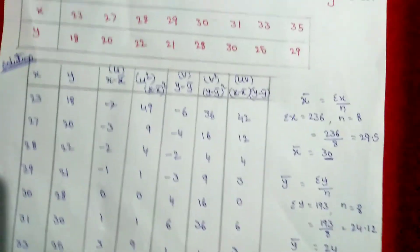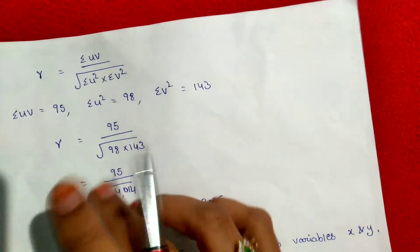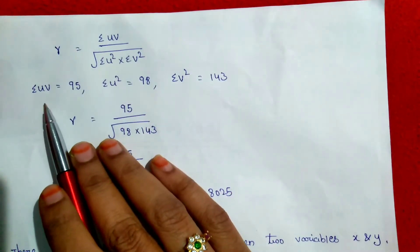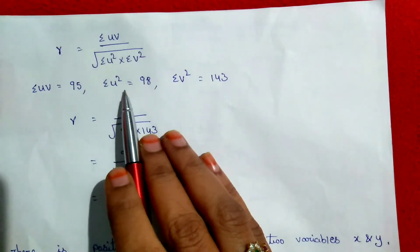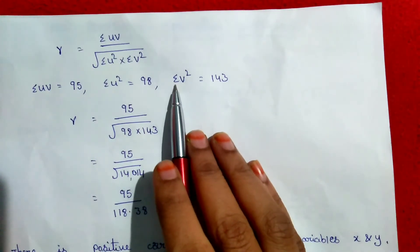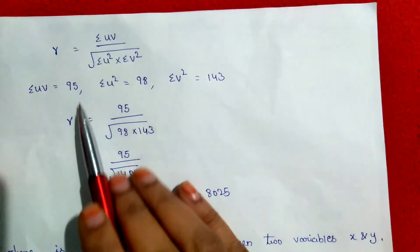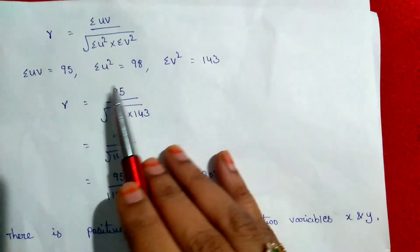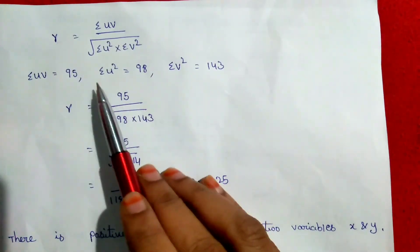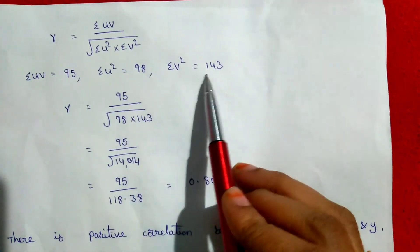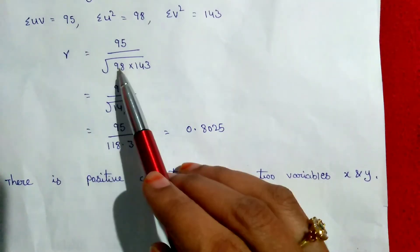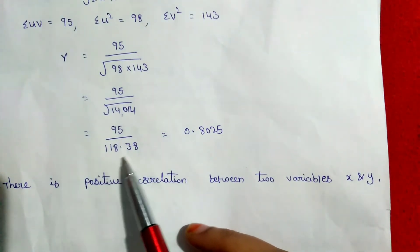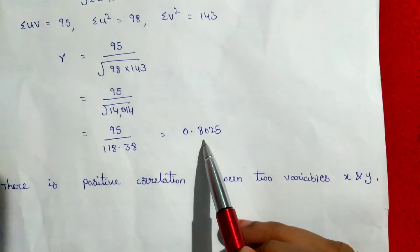After that, using the correlation formula: r equals summation uv divided by square root of summation u-squared into summation v-squared. Substituting: summation uv is 95, summation u-squared is 98, summation v-squared is 143. So r equals 95 divided by square root of 98 into 143, which equals 95 divided by square root of 14,014, which equals 95 divided by 118.38, giving r equal to 0.8025.